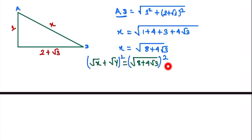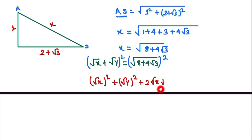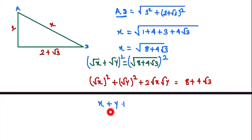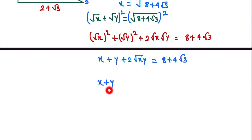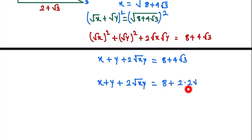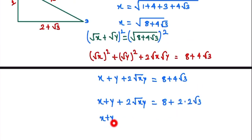Squaring both sides and expanding using the identity (a + b)² = a² + b² + 2ab, we get: (√x)² + (√y)² + 2√x·√y = 8 + 4√3. This simplifies to: x + y + 2√(xy) = 8 + 4√3.